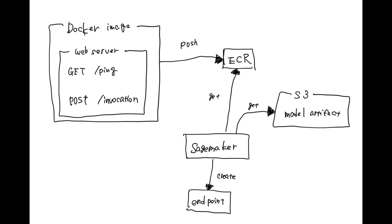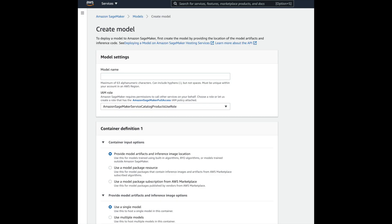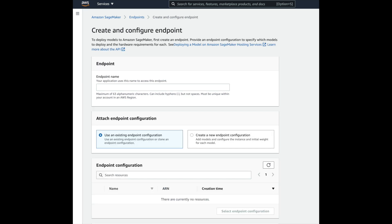I'm going to describe this approach a bit. You should implement two endpoints on a web server in the Docker image. One is the endpoint for health check, and the second is for inference with your model. After you implement this web server, build the image and push it to ECR. You should have a model artifact and store it in S3. After that, you create a model and create an endpoint.